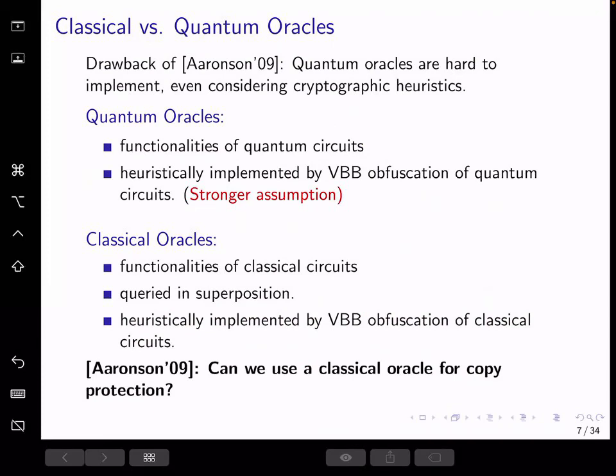Both kinds of oracles can be heuristically implemented by cryptography assumption called virtual black box obfuscation, which scrambles a program and makes it no different from accessing an oracle to the adversary. Both of these assumptions are strong, but obfuscation for quantum circuits is still yet a stronger assumption than the classical one.